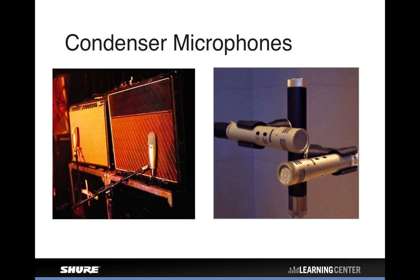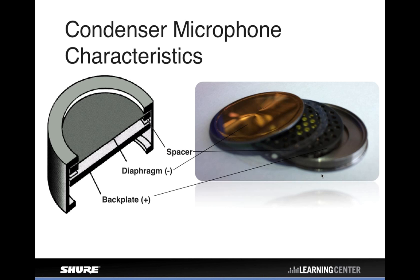Condenser microphones are much more sensitive than dynamic microphones and are better suited for distant miking applications. The dynamic mic element is also somewhat limited in frequency response — they sound pretty good, but there's a limit to how natural and wide-ranging they can be. The condenser microphone doesn't really have those same restrictions, so beyond sensitivity there's also a sound quality advantage with condenser microphones.